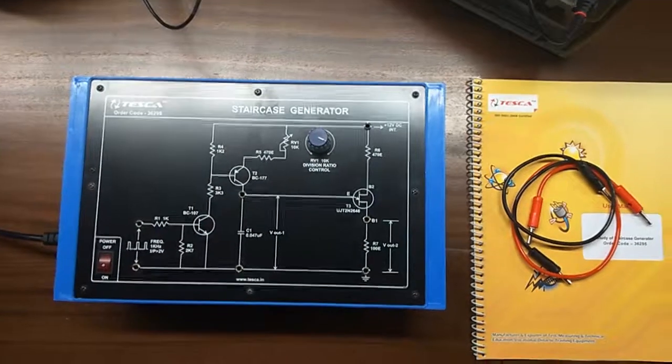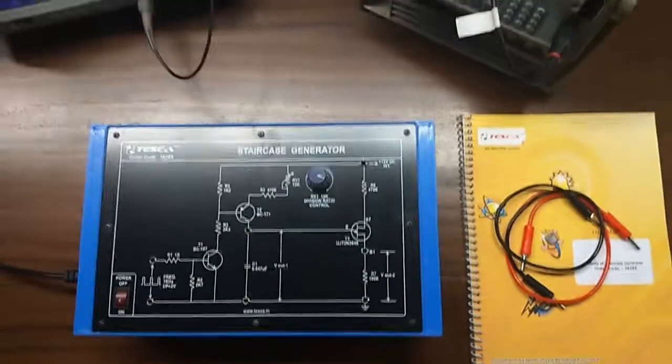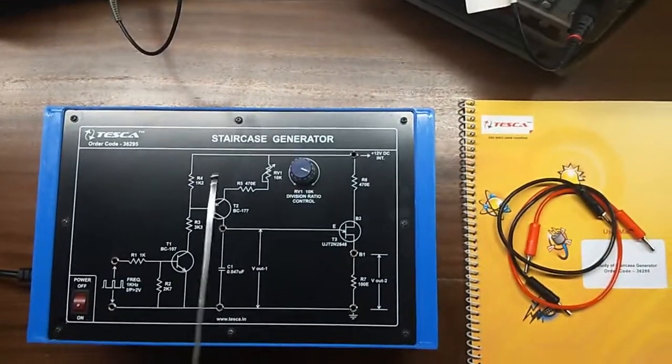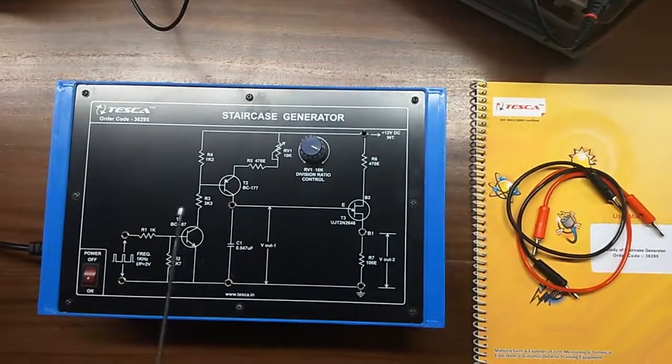Today, we are going to show you our staircase generator trainer kit, order code 36295. This is the trainer kit and this is the mimic diagram on the trainer kit.